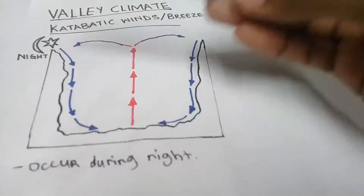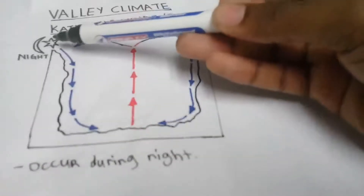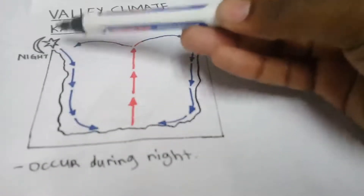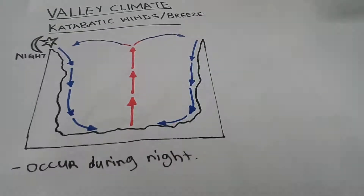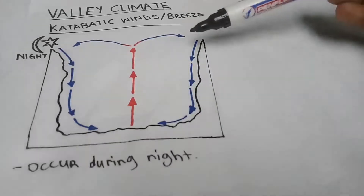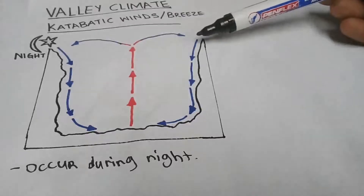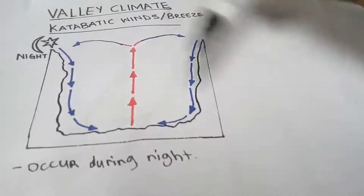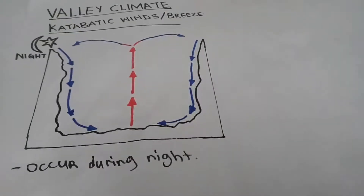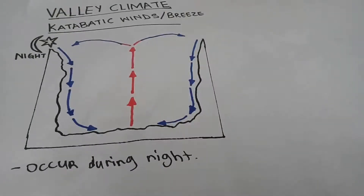During your exam, they may show illustrations with the moon and stars — you should know these indicate katabatic winds or katabatic breeze. These katabatic winds are going down to the valley floor on both sides. So now you know how katabatic winds and breeze occur and develop.